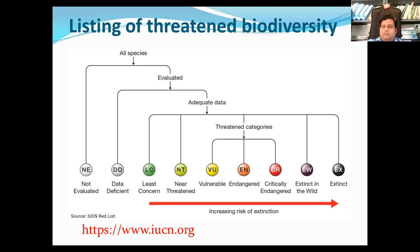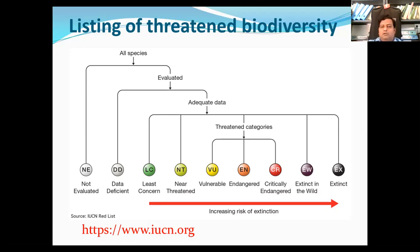A species experiencing roughly a 90% decline over 10 years or a generation would be classified as Critically Endangered. Likewise, a species undergoing a 50% decline over the same period would be classified as Endangered, and one expected to undergo a 30% reduction over the same time frame would be considered Vulnerable. It is important to understand that a species cannot be classified using one criterion alone — scientists must consider all five criteria when determining the status of a species.